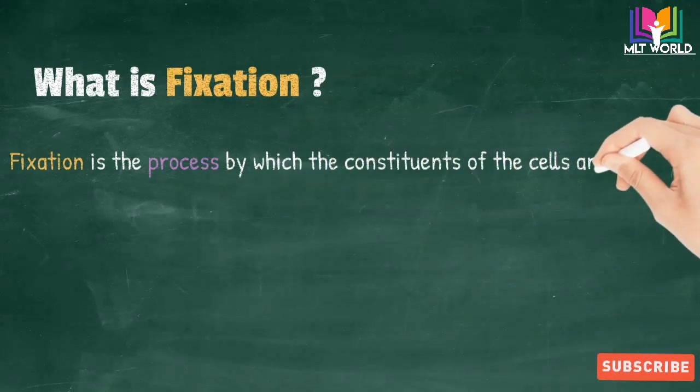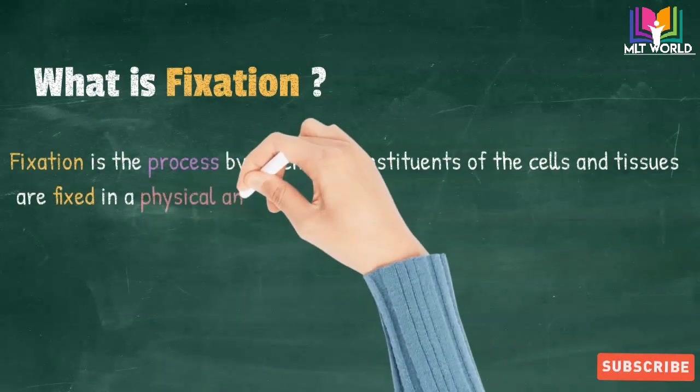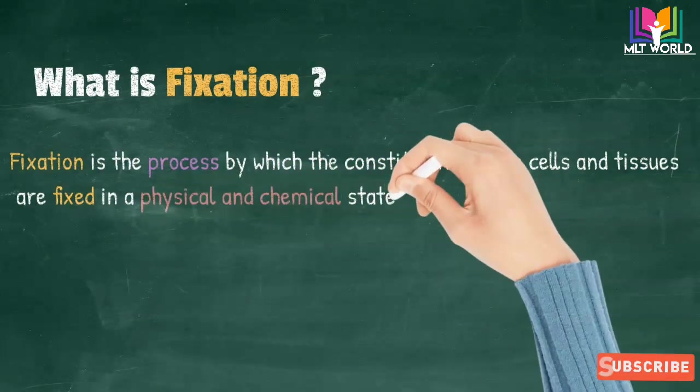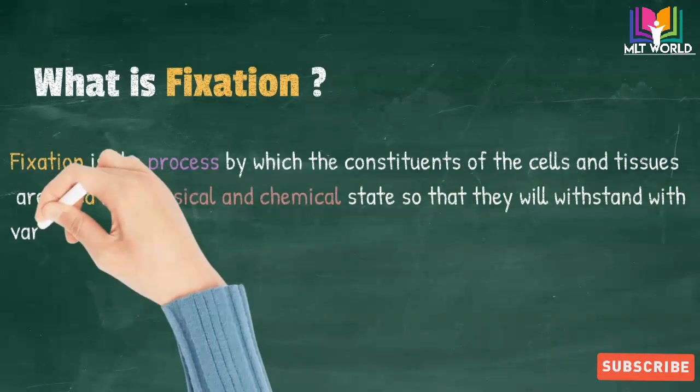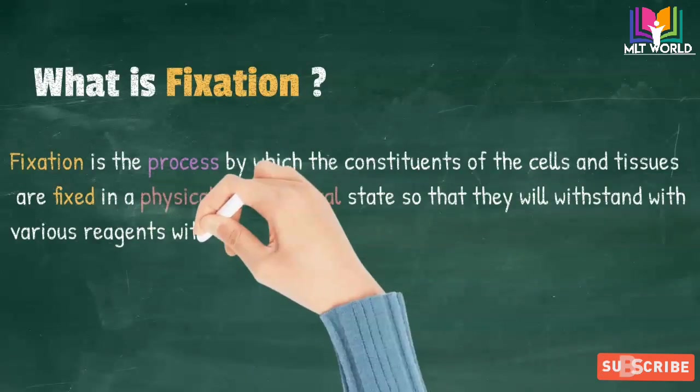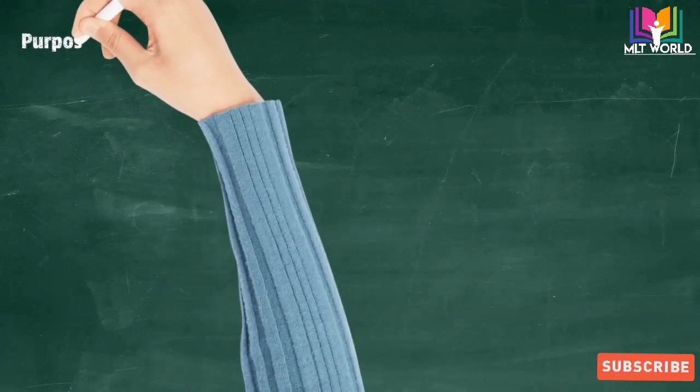Fixation is the process by which the constituents of cells and tissues are fixed in a physical and chemical state so that they will withstand various reagents with minimal loss of structure. This is achieved by exposing the tissue to chemical compounds called fixatives.